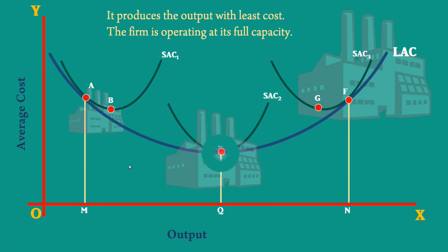Only the plant which is at the minimum point of Long Run Average Cost Curve alone can enable a firm to become optimum.